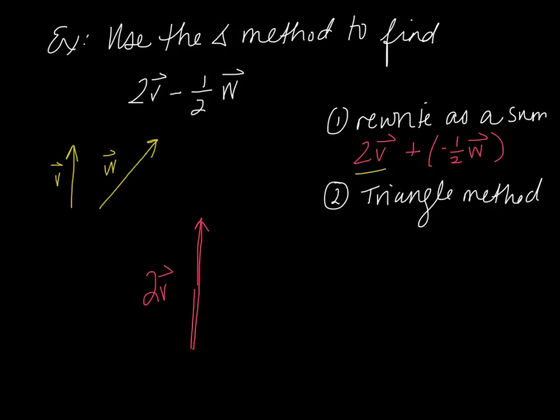I'm using the triangle method. So I'm going to take about half of vector w. That's about that long. And it's negative 1 half, so I'm going to switch the direction. I'm going to do tip to tail. So I'm going to take negative 1 half vector w. I have tip to tail here. And then the resultant is going to be drawn tail to tail here. So in white here, we have 2 times vector v minus 1 half vector w.